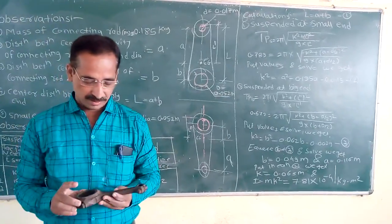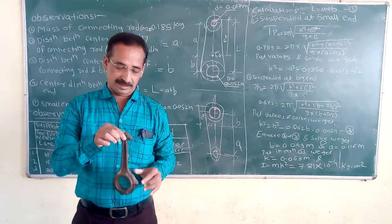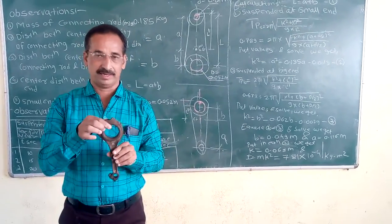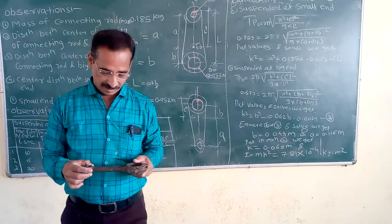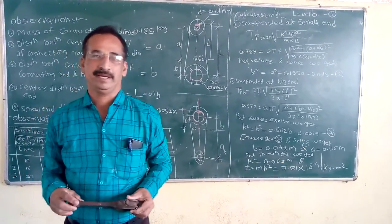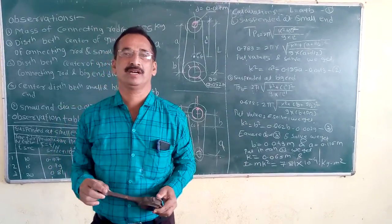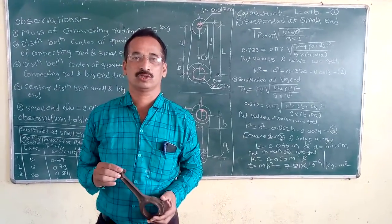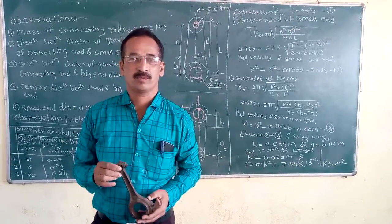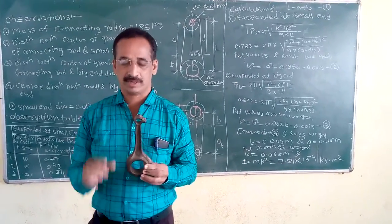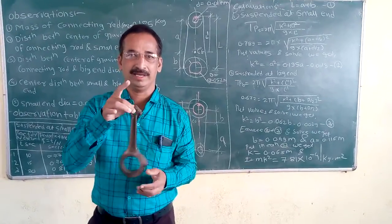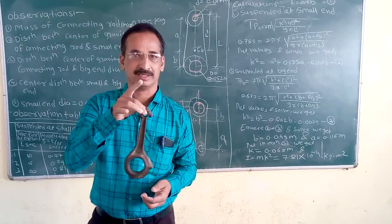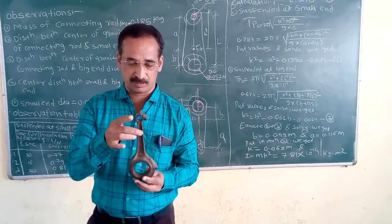During the experiment, we are going to find out the time period by suspending it at the small end, and also find out the time period by suspending it at the big end. A compound pendulum is a rigid body which is suspended vertically and oscillates under gravitational force with small amplitude. We treat this connecting rod as a compound pendulum — suspended vertically, disturbed slightly so that it oscillates with small amplitude — and measure the time period.